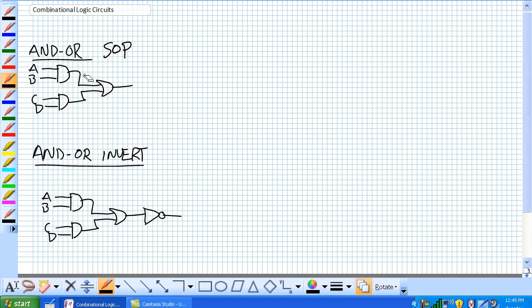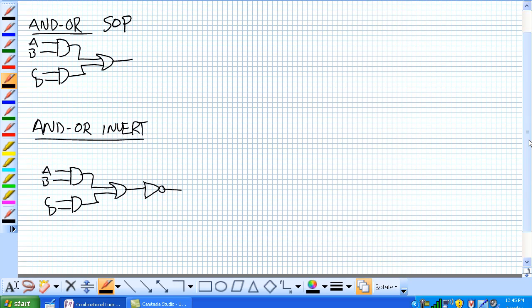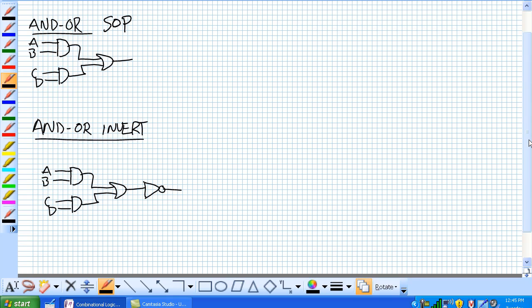Something went black. I hope you can see this. So and or invert. This is where it gets, you have to start putting your thinking cap on here. You can use an and or invert to implement the product of sums, the POS implementation. This seems kind of weird at first, but now think about this.